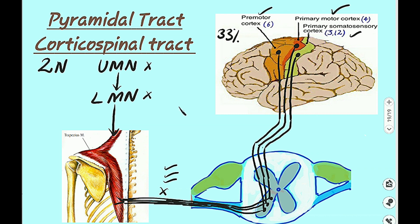The basic anatomy of the pyramidal tract or corticospinal tract consists of two neurons: upper motor neuron and lower motor neuron. The upper motor neuronal cell bodies are equally present in the premotor cortex, primary motor cortex, and primary somatosensory area. From here, the upper motor neuron descends, crosses to the opposite side, and reaches the lower motor neuron in the ventral horn of the spinal cord. The lower motor neuron then exits the central nervous system and reaches the skeletal muscle.